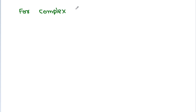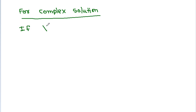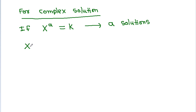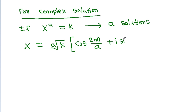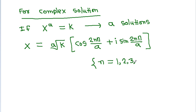And for complex solutions, if x power a is equal to k, then it will have a solutions. x will be equal to the a-th root of k times cos(2nπ/a) plus or minus i·sin(2nπ/a), where n is equal to 1, 2, 3, 4, and so on.